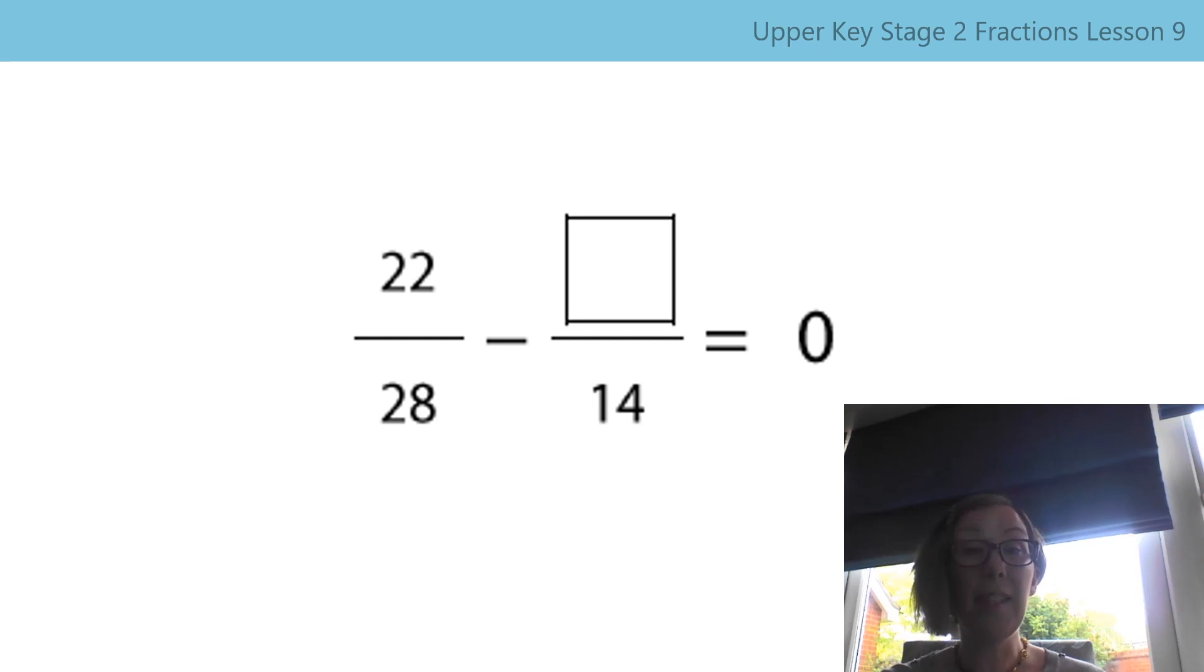I was looking at the 28 and the 14 as well. So 28 divided by 2 is 14. So what does that mean we need to do to our numerator then? You've guessed it. You also need to divide by 2. So we end up with 11 fourteenths. That's looking at our horizontal relationship there because we compared the two denominators to help us to work out the relationship. In this case, that was probably easier to do.